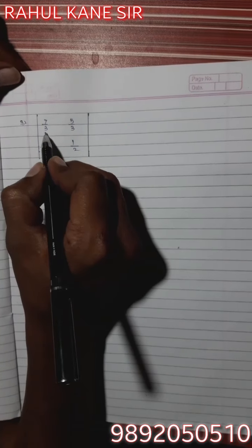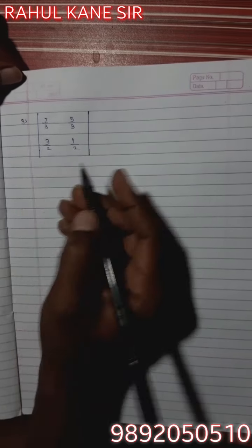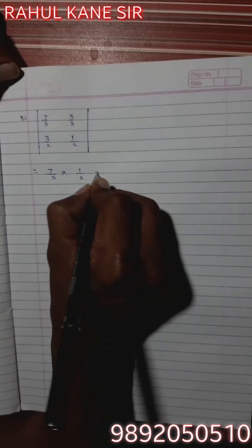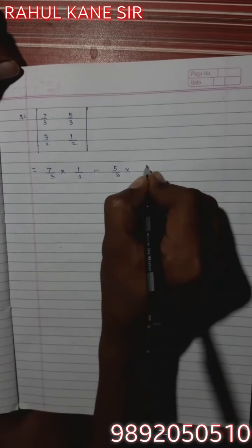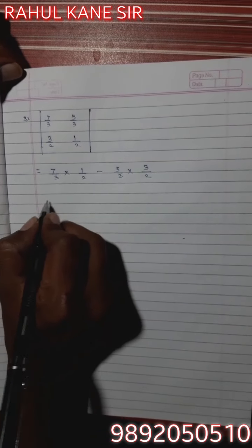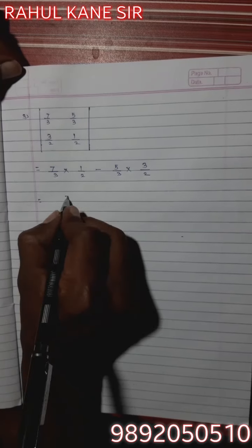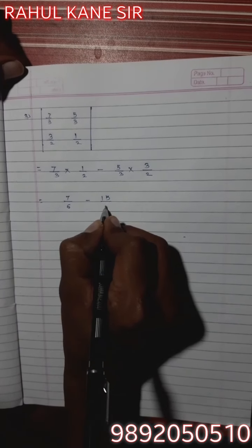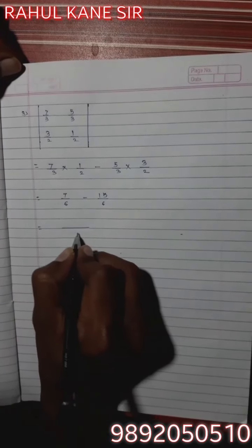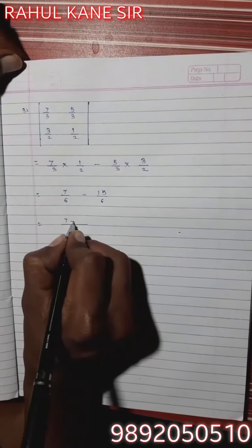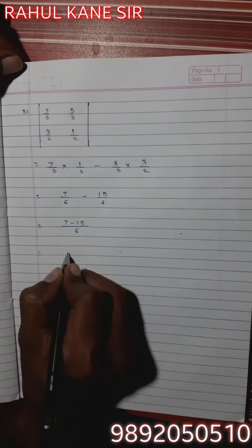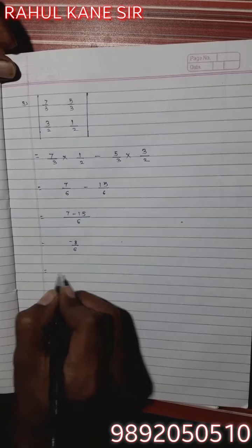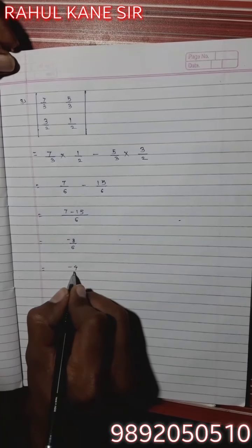Absolute value of |7/3, 5/3, 3/2, 1/2| equals (7/3)×(1/2) minus (5/3)×(3/2). We get 7/6 minus 15/6. Same denominator, so numerator: 7 minus 15 equals -8, giving -8/6. Both numbers are divisible by 2, so we get -4/3.